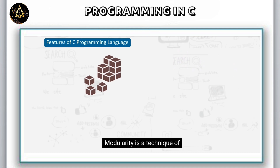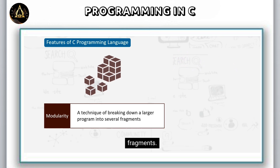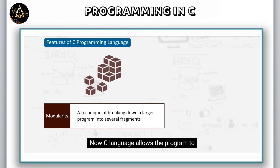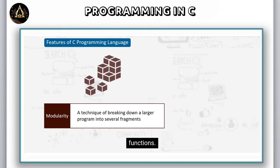Modularity is a technique of breaking down a larger program into several fragments. C language allows the program to be broken down into smaller units which can be run individually with the help of functions.